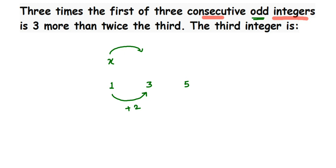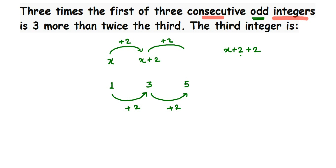So if x is my first number, I add 2 to get the second odd consecutive number, which is x plus 2. Then from 3 to 5 I again add 2, so to x plus 2 I add another 2, giving x plus 4 as the third consecutive odd number. So the three consecutive odd integers are x, x plus 2, and x plus 4.